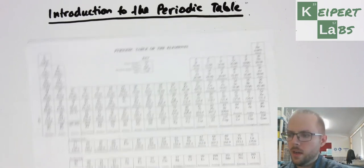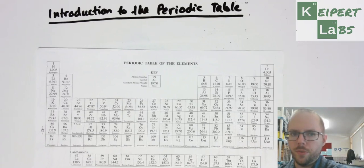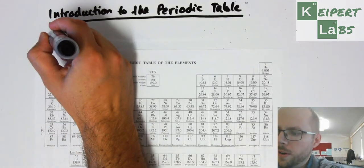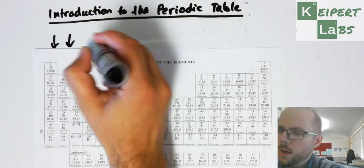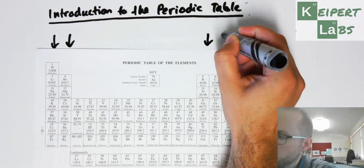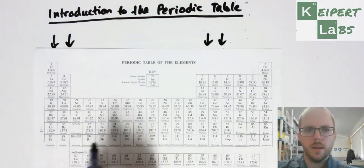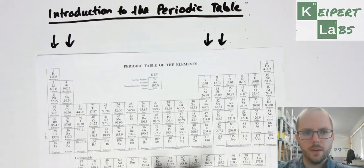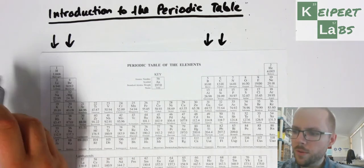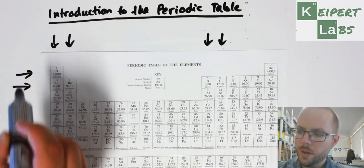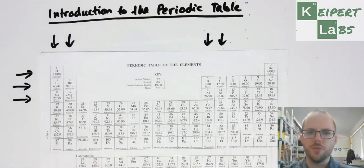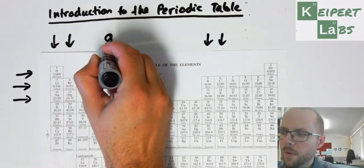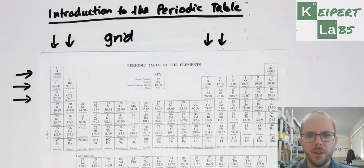What I want you to notice to start with is we've got two things going on here. We have columns as we're looking down it like that, and we've also got rows. So we have this kind of grid sort of structure, this grid sort of structure.